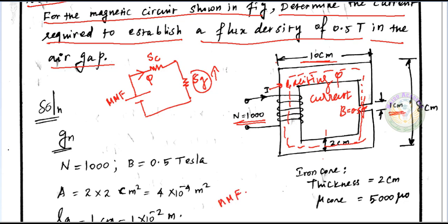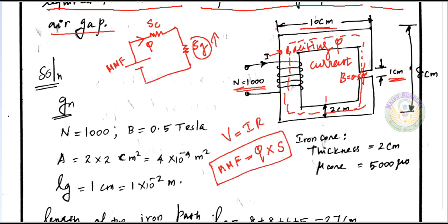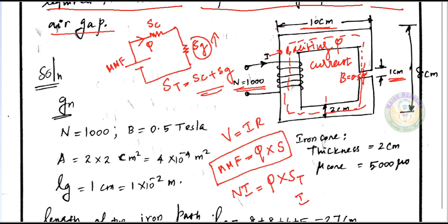The MMF formula is: MMF = Flux × S (total reluctance). This is analogous to V = IR in electric circuits. So MMF = N × I = Flux × S_total. The total reluctance is the sum of two reluctances: S_total = Sc + Sg, since it is a series magnetic circuit. Now we substitute the flux value; B = Flux / A, so Flux = B × A.